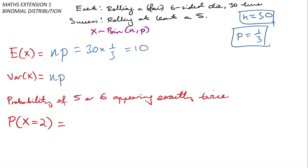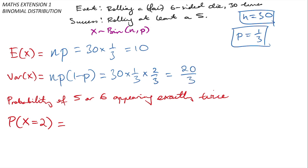For the variance, the formula is np(1−p). Using my values, that's 30 times 1/3 times 2/3, which gives 20/3.